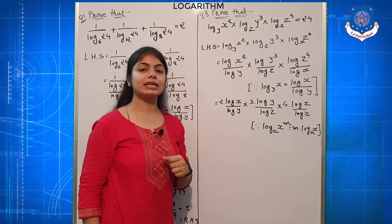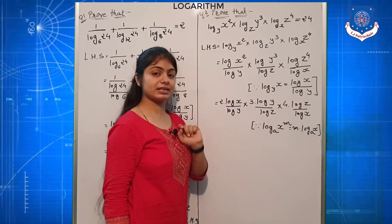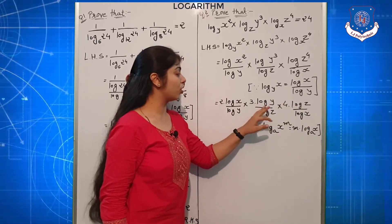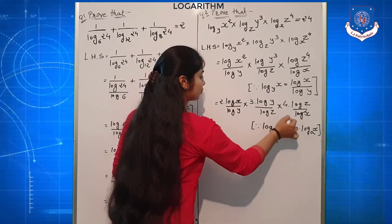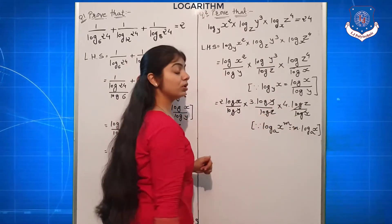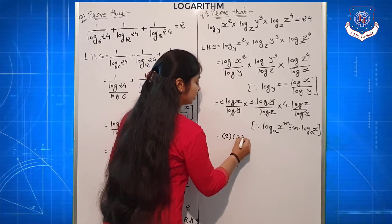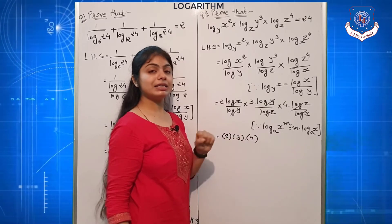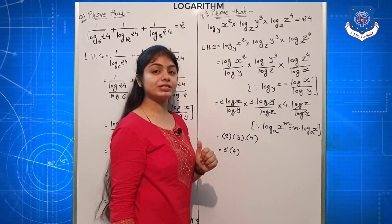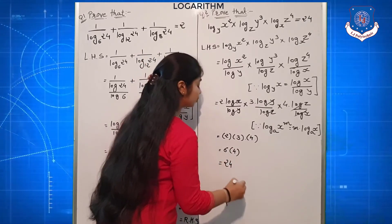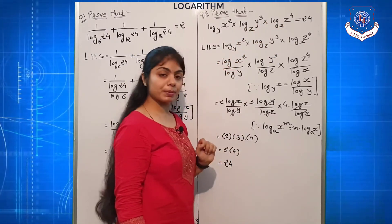After applying the power law, cancellation happens. Log x and log x cancel out, log y and log y cancel out, log z and log z cancel out — because all terms are the same and in multiplication form. The remaining terms are 2 × 3 × 4. Two threes are 6, so write down 6 × 4, which equals 24. We have proved it equals 24, which is the RHS.